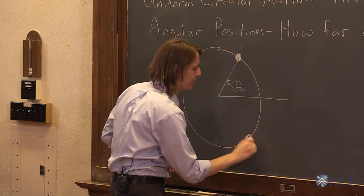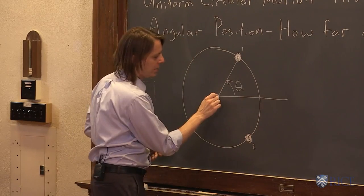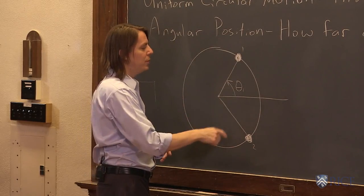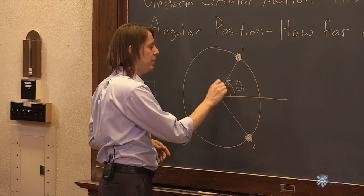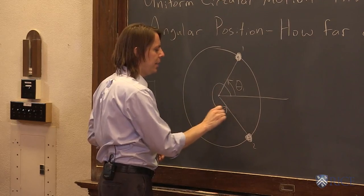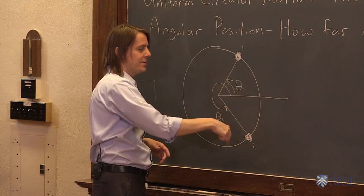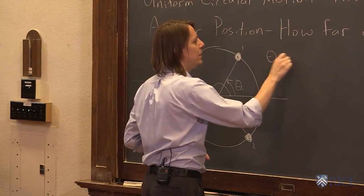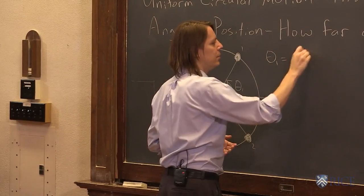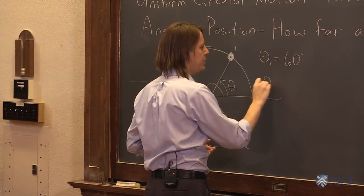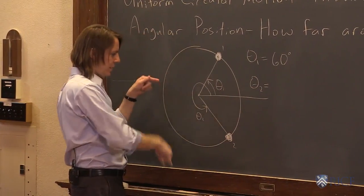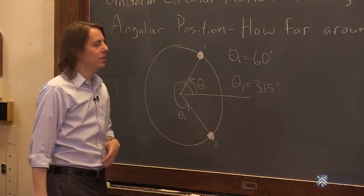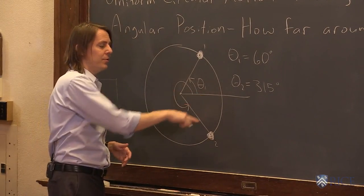Say Sal's gone all the way around and made it to here—you call that position two and you draw something like that. To get the position theta two, you always go counterclockwise. You would go all the way around like that, and that is theta two. So here you would say theta one is about 60 degrees, and theta two is about 315 degrees. That's how you measure angle.